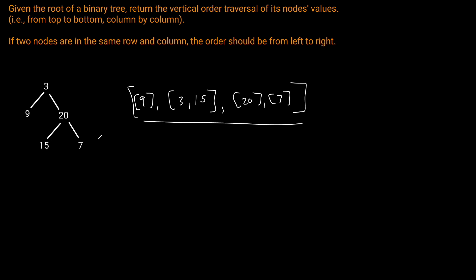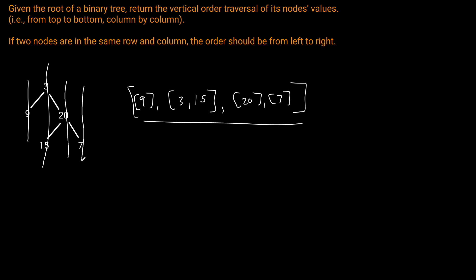We can see that this is one column, and remember we want to go from left to right. So this is one column here, this is another column, this is another column, and this is another column. But how exactly are we supposed to solve this question?